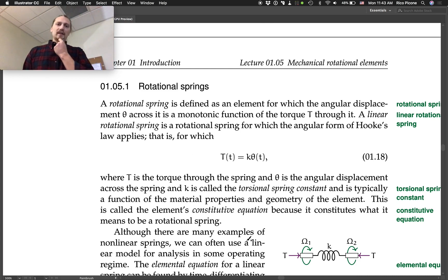A rotational spring is defined as an element for which the angular displacement theta across it is a monotonic function of the torque T through it. A linear rotational spring is a rotational spring for which the angular form of Hooke's law applies. That is, for which T equals k theta, where k is the torsional spring constant. It's typically a function of the material properties and geometry of the element. This is called the element's constitutive equation because it constitutes what it means to be a rotational spring.